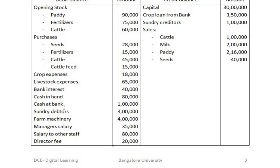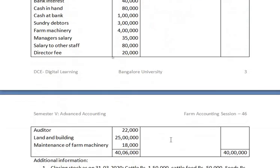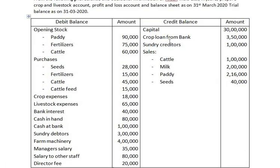Cash in hand, cash at bank, and sundry debtors are assets. Farm machinery is an asset. Manager salary, salary to other staff, director fees, and auditor fees are all indirect expenses and have to be debited to the profit and loss account. Land and building is an asset. Maintenance of farm machinery has to be debited to the crop account. Capital and crop loan from bank have to be recorded under liabilities. Sundry creditors is a liability. Sales have to be credited to the crop and livestock account.